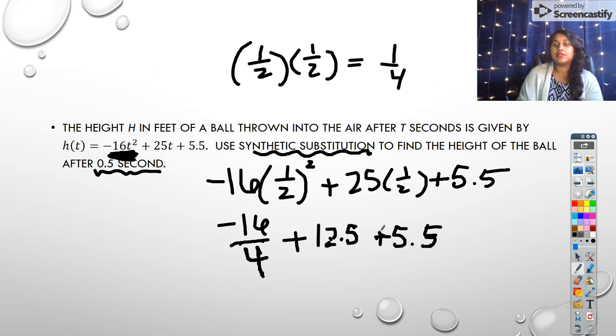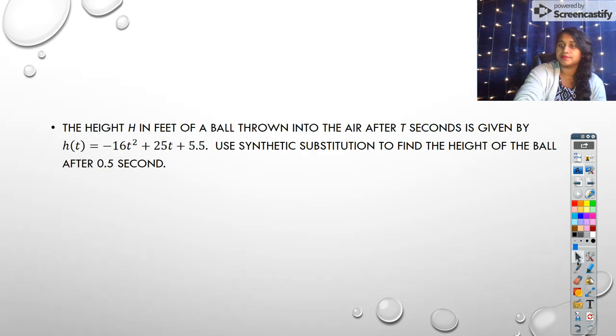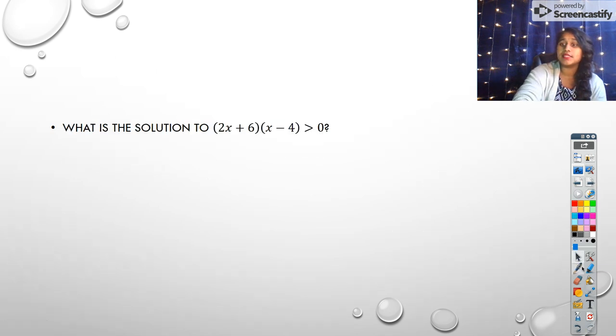Well, that becomes real easy to see. See now I can put those decimals together, right? 12.5 plus 5.5. That's going to become 13 and five. So 18. So this becomes negative four plus 18. So that becomes positive 14 and whatever our feet, our units.